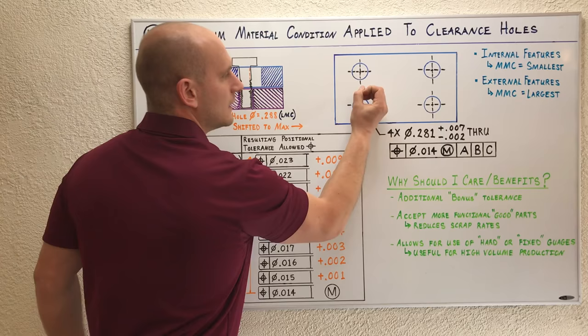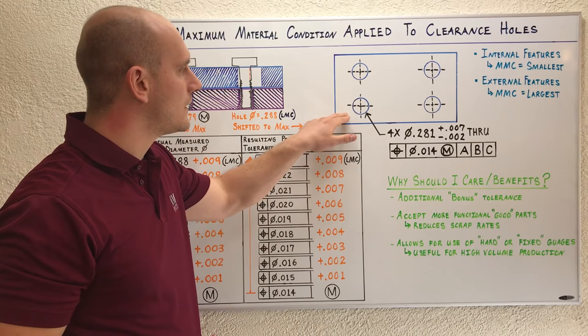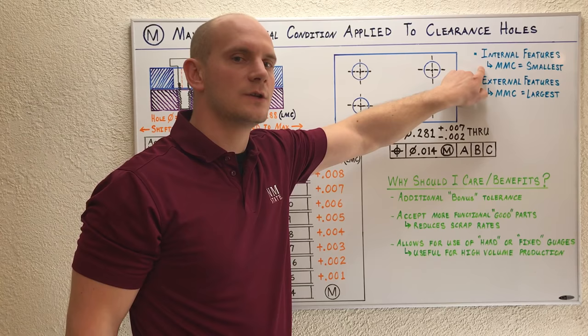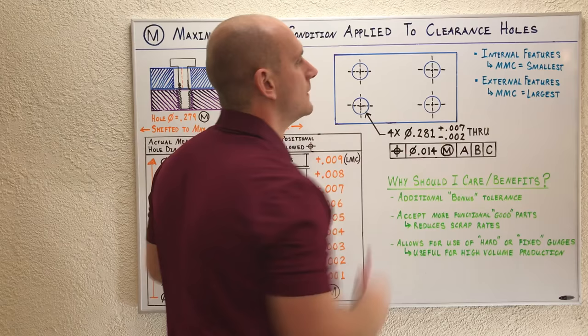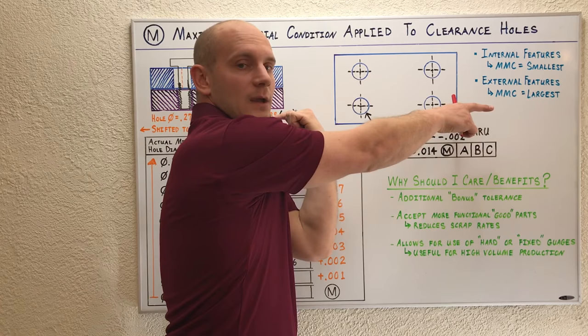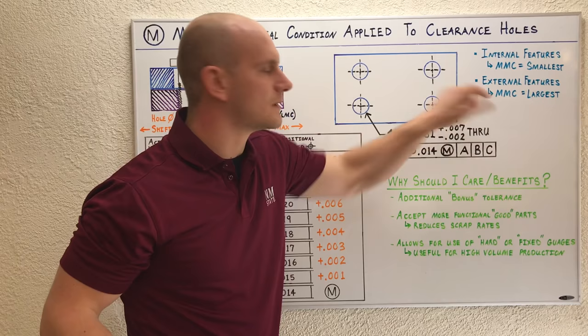For internal features like clearance holes, your MMC or maximum material condition size is your smallest size. For external features like the width of this part, your MMC size is your largest size. As that width gets bigger, this part has more material, so the largest size is your MMC size.